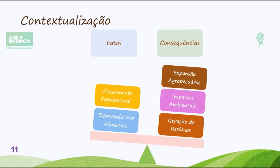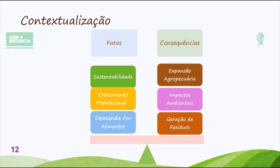Fazendo todo esse apanhado geral, a gente traz algo para fazer o equilíbrio dessa balança, que é a sustentabilidade. O que é sustentabilidade? É uma forma de manter as minhas atividades de forma que possibilite o desenvolvimento, o aproveitamento e o usufruto dos recursos naturais pelas gerações futuras. Um processo sustentável é aquele que leva em consideração os aspectos ambientais, faz uma preservação desses recursos, ou seja, que diminui o impacto.